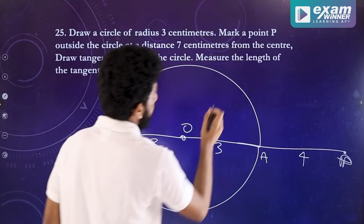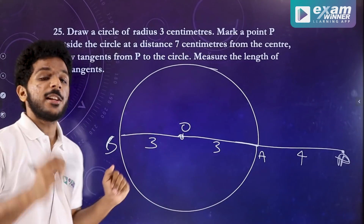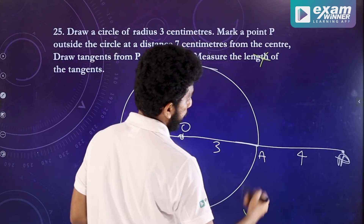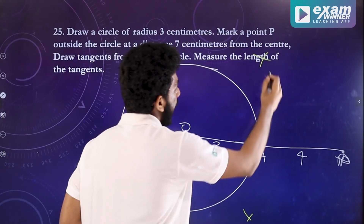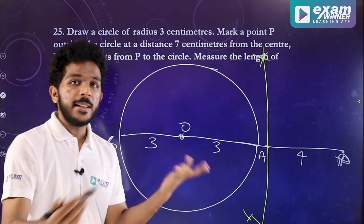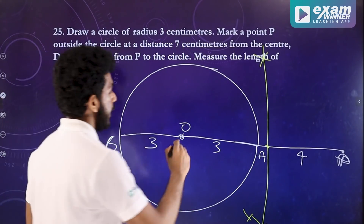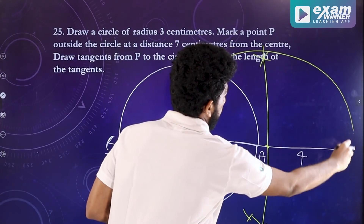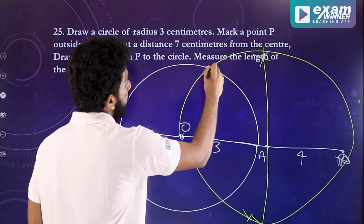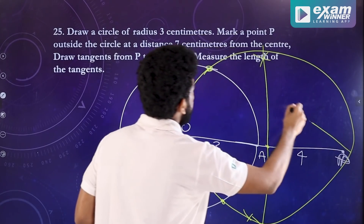We find the tangent using a circle with 3.5 cm radius. We have two circles that meet at a point — the tangents meet that point. The two circles meet the point, and the tangents meet the point P.